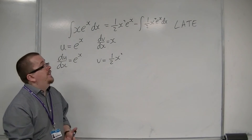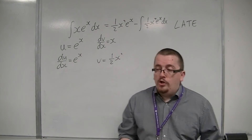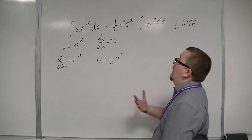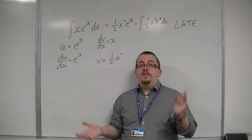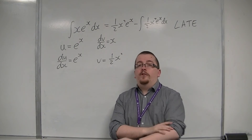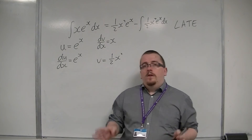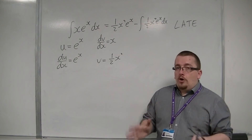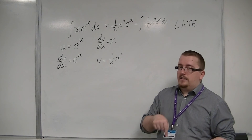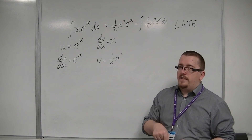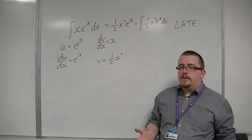So this just keeps going on and on. At this point, you should be looking at your question and what you've done so far, and saying: I can't go any further. So go back, then select x to be u instead, and dv by dx to be e to the x, and try it again.